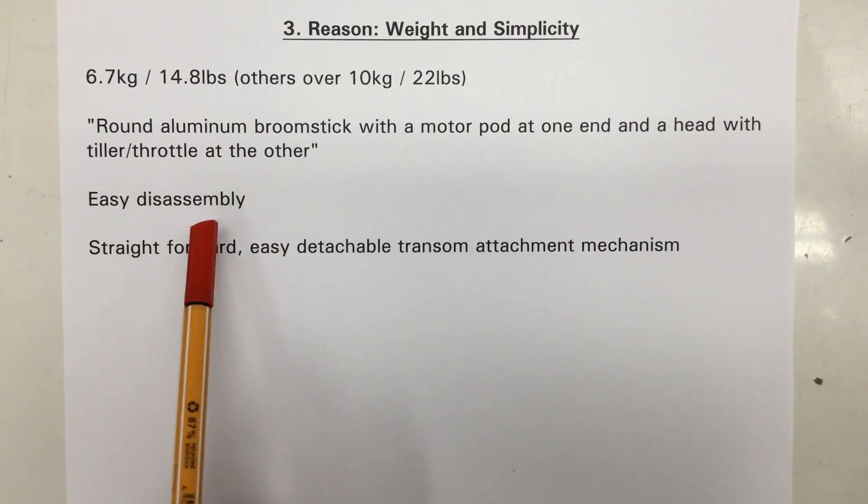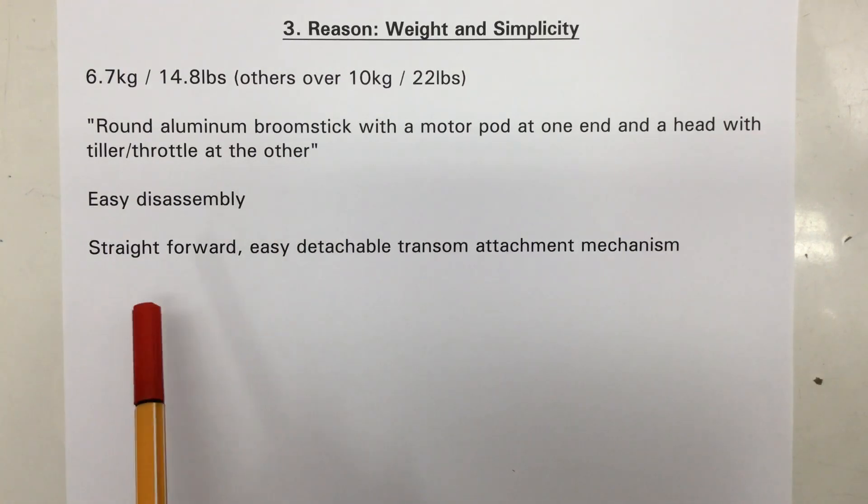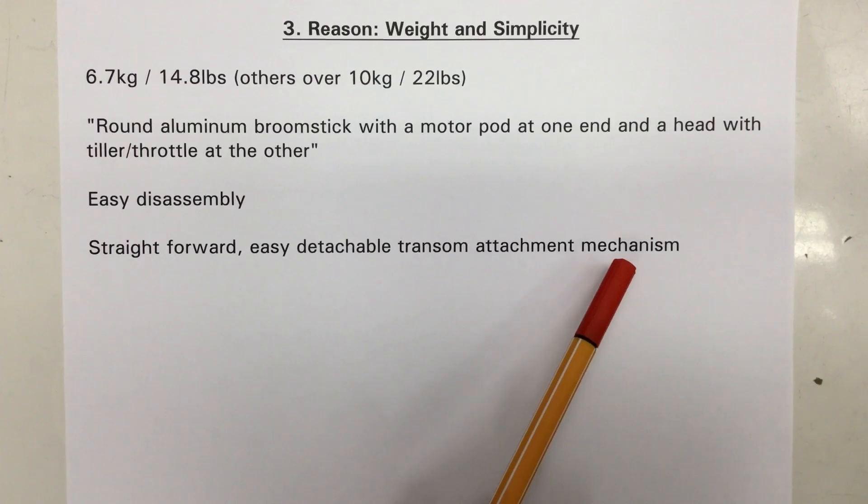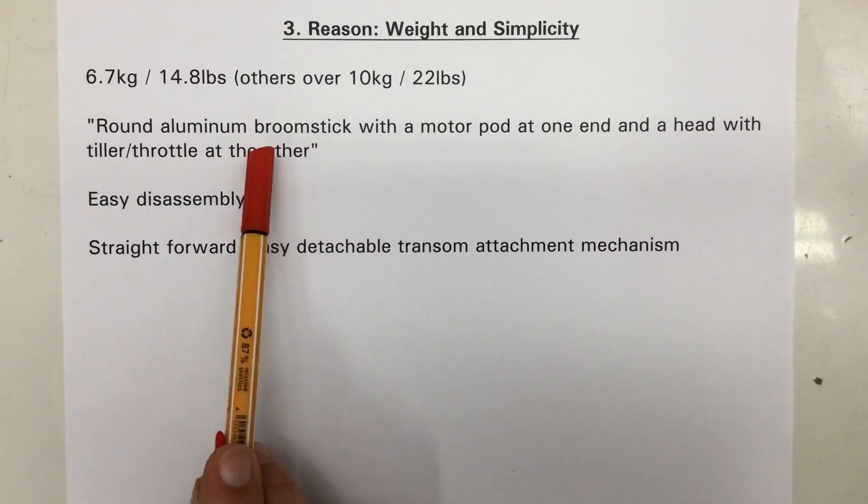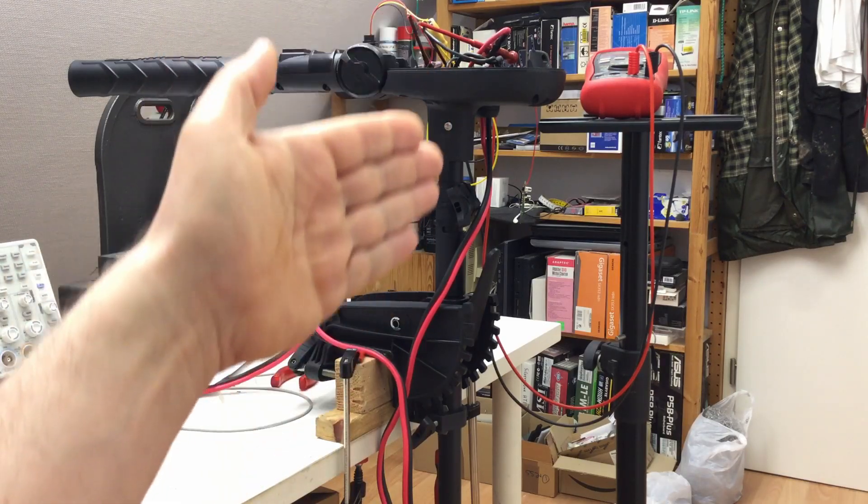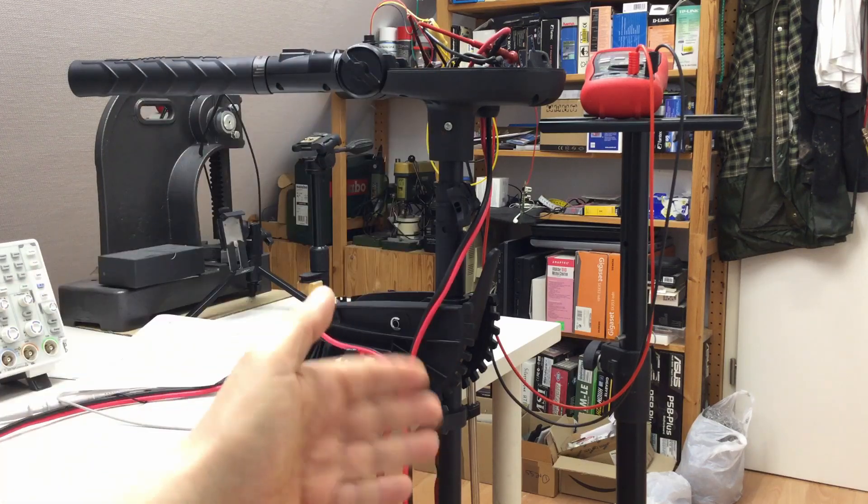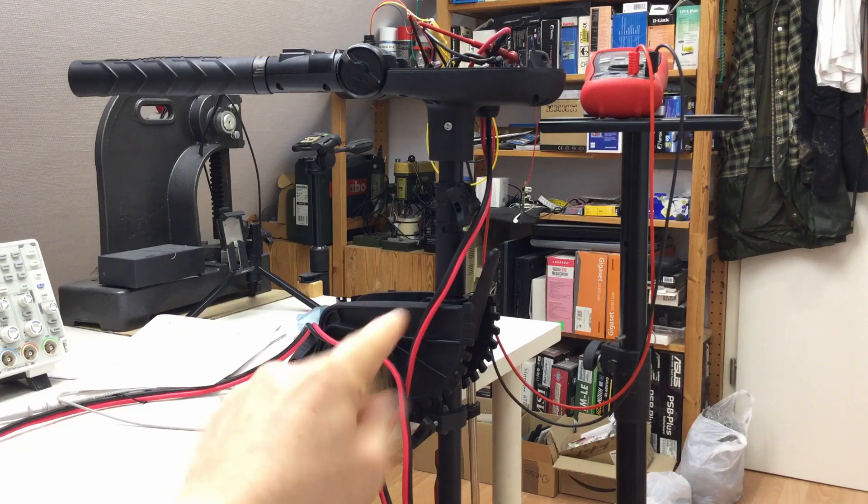That, of course, implies easy disassembly, which I'm in desperate need of. Finally, it has a straightforward, easy detachable transom attachment mechanism. And with detachable, I don't mean detach it from the transom, but detach your broomstick, your shaft, from the whole mechanism. It's quite easy. Once you remove the head, you can simply slide the shaft out of the transom attachment assembly.